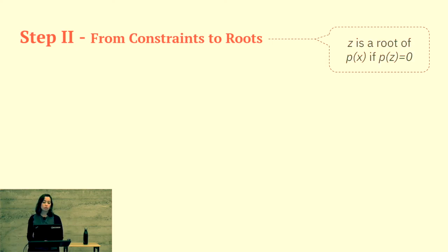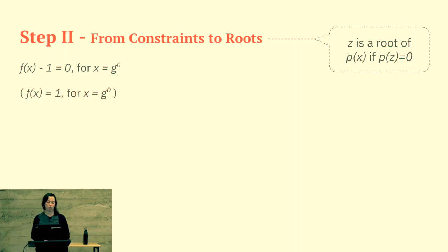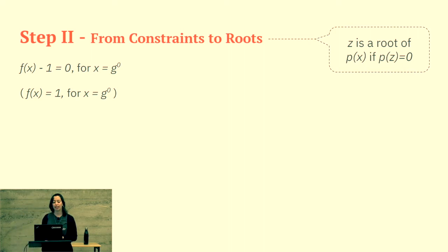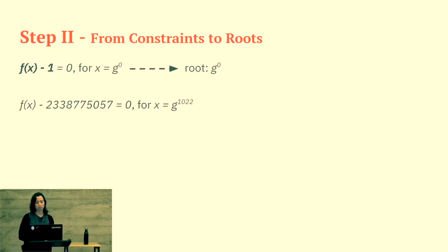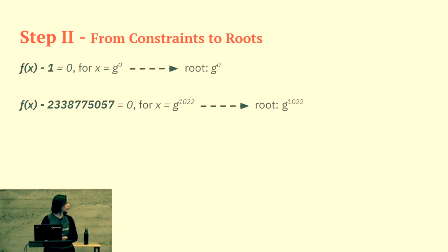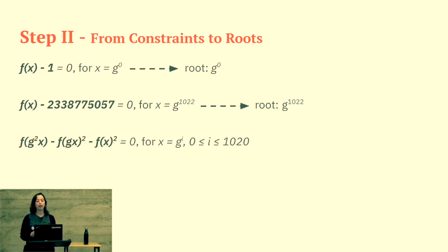Next, we are going to talk about roots of polynomials. z is the root of p if p(z) equals 0. So if we have our first constraint — f(x) equals 1 for x equals g to the power of 0 — shifting 1 to the left-hand side gives f(x) minus 1 equals 0 for the relevant g. We can say that g⁰ is the root of f(x) minus 1, by the definition of a root. The same for the second constraint and the last constraint. Here we have a set of roots: g to the power of i for all the relevant i's.